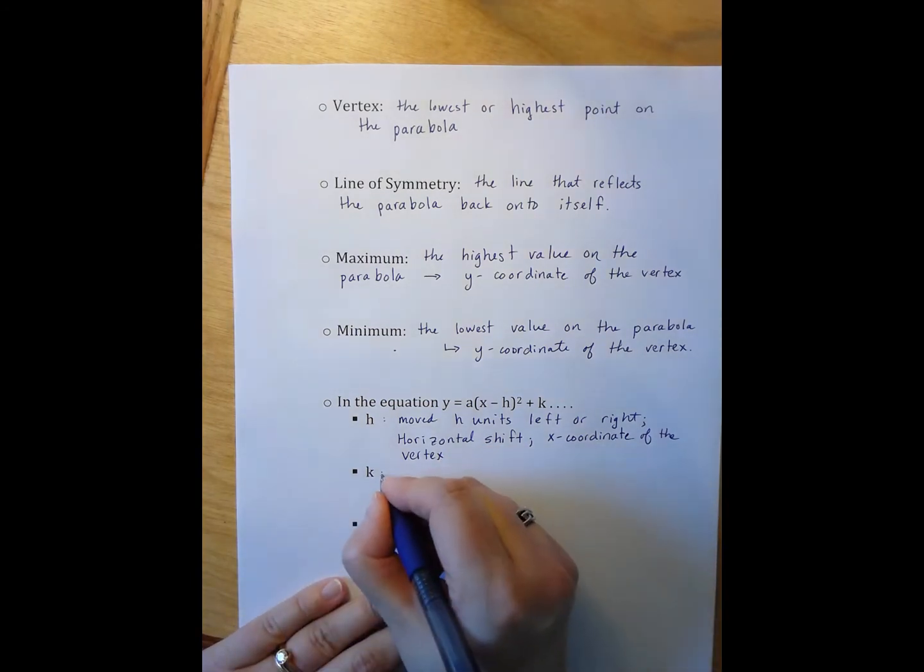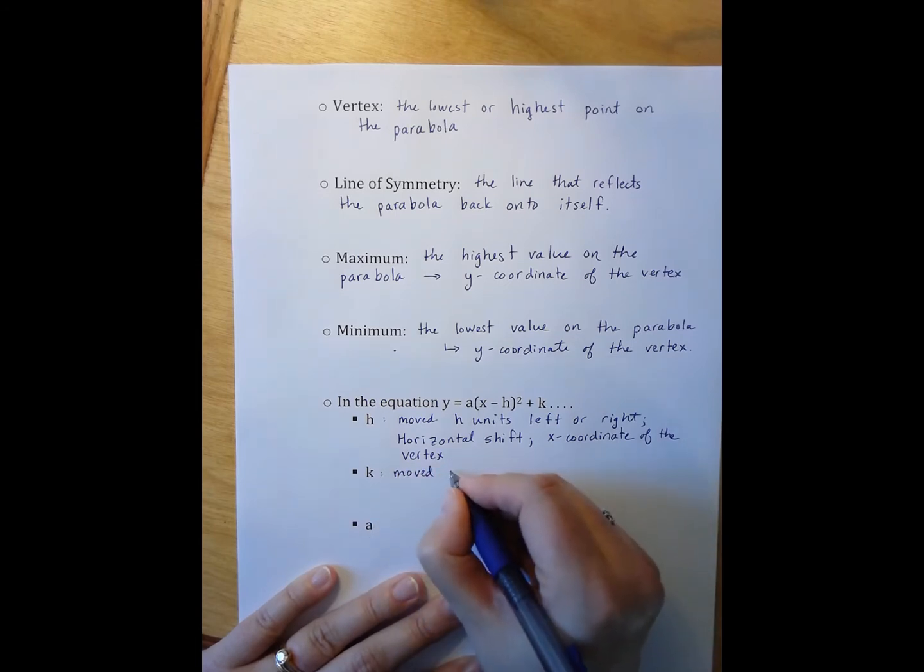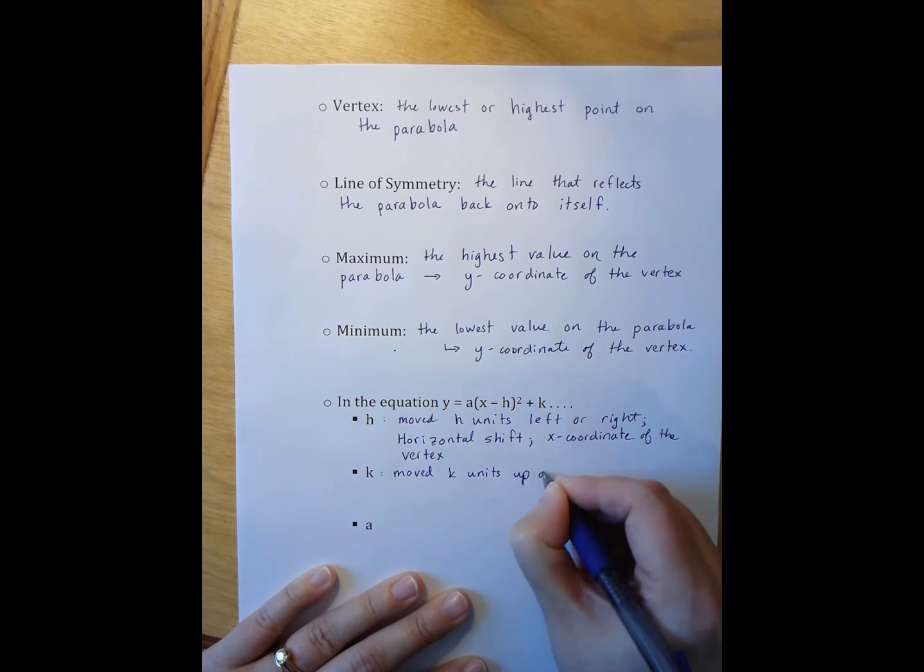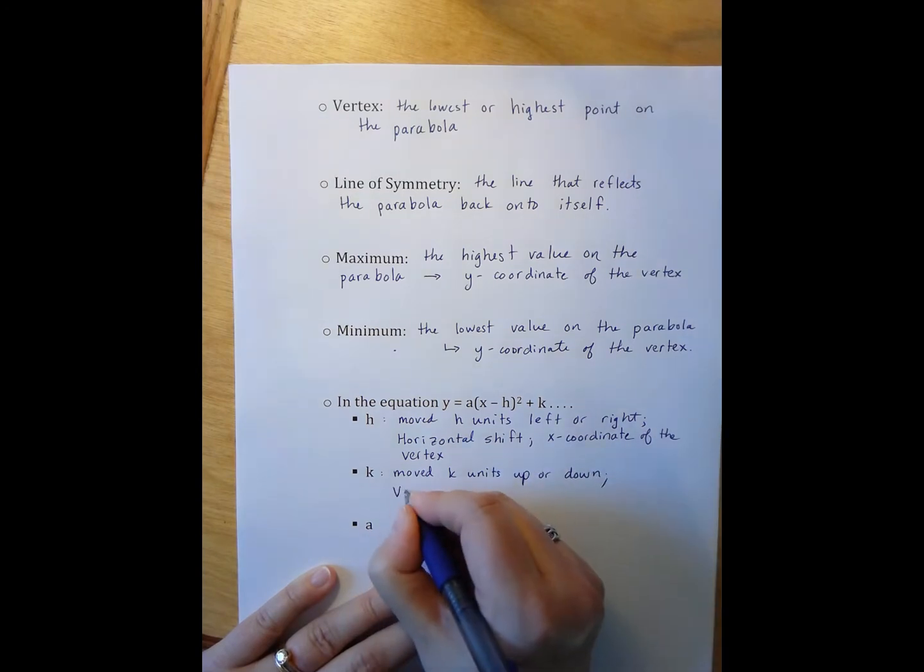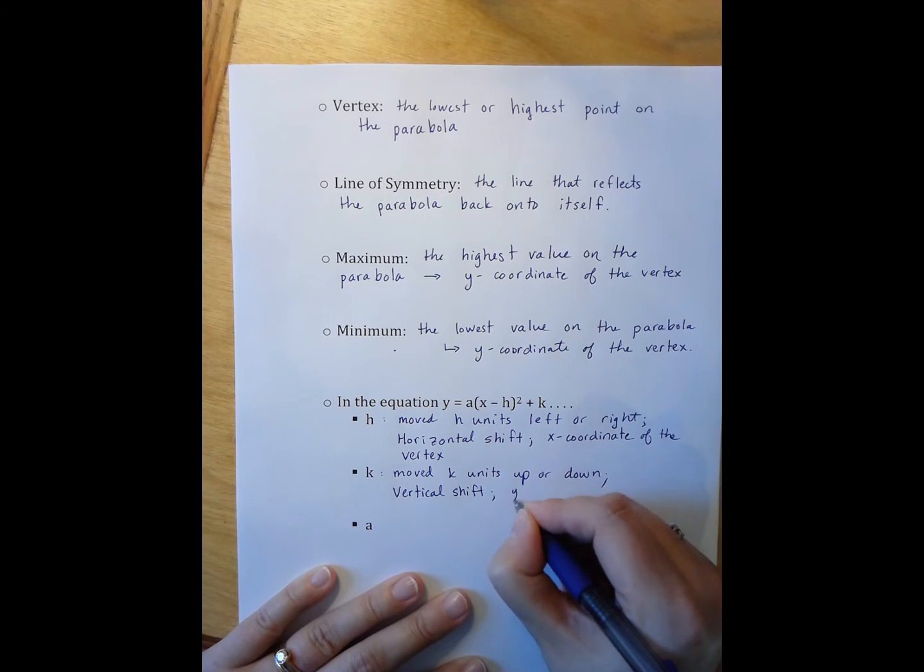The k tells us how much the function was moved, k units, up or down. So this is our vertical shift, which means it is the y-coordinate of the vertex.